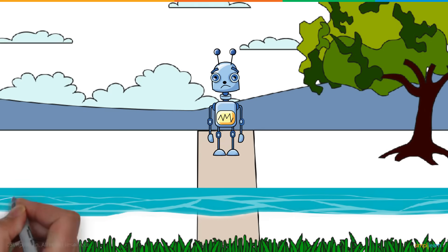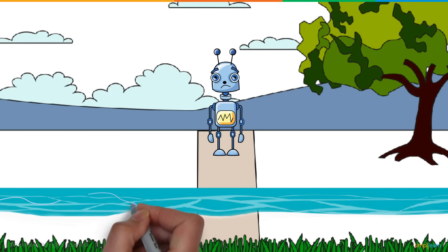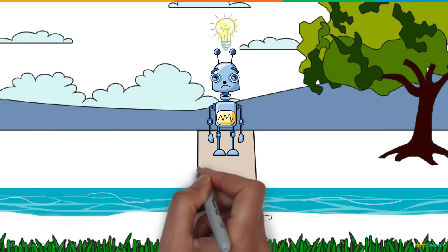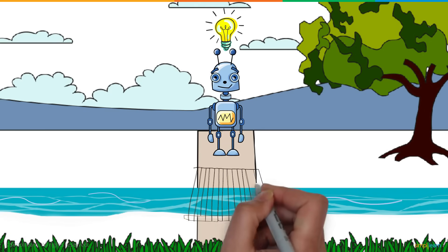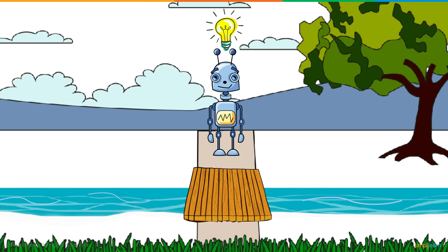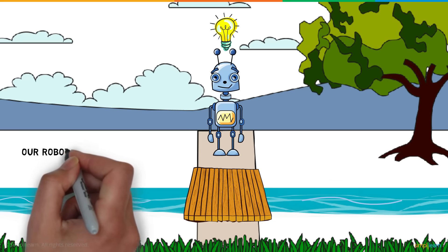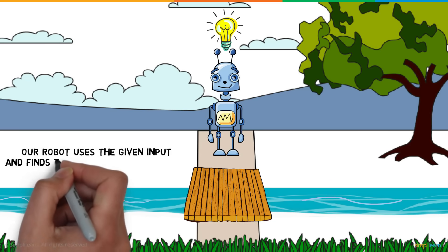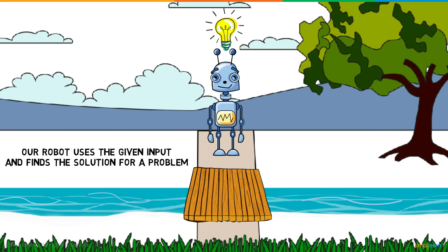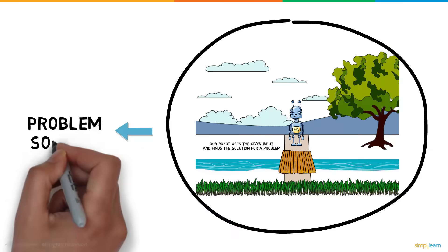After a short stroll, the robot now encounters a stream that it cannot swim across. Using the plank provided as an input, the robot is able to cross this stream. So our robot uses the given input and finds the solution for a problem. This is problem solving.